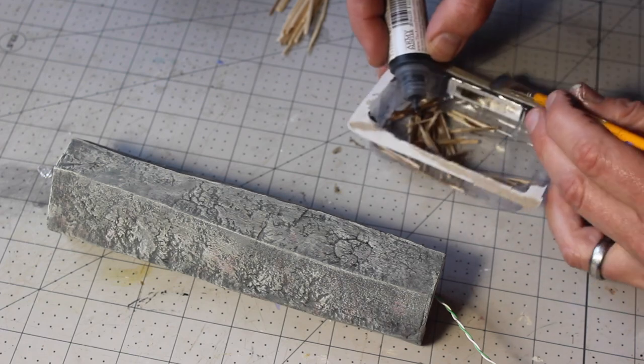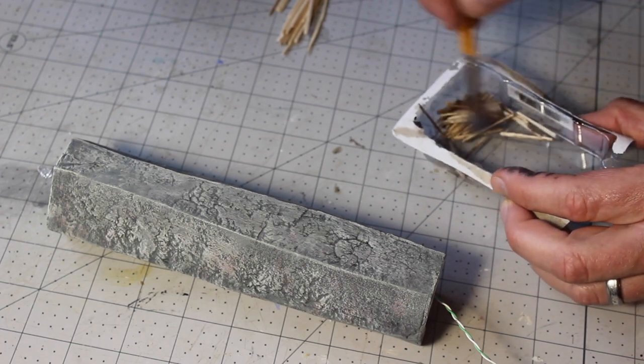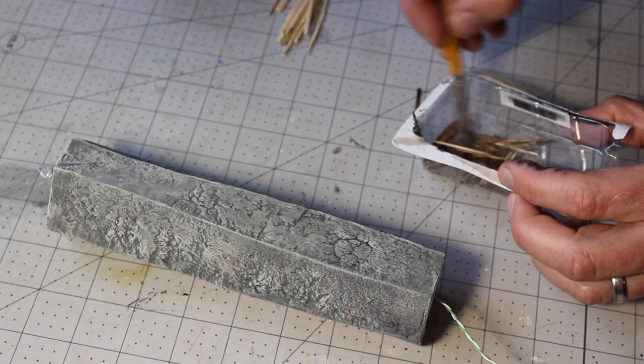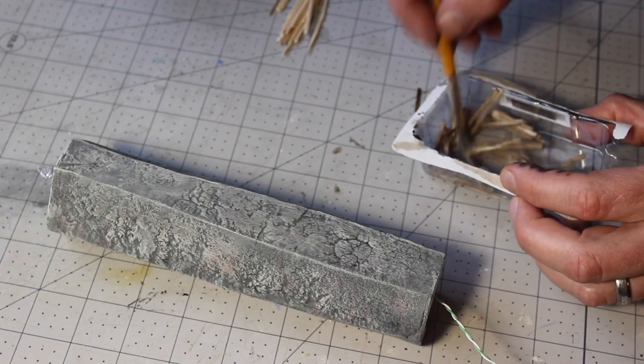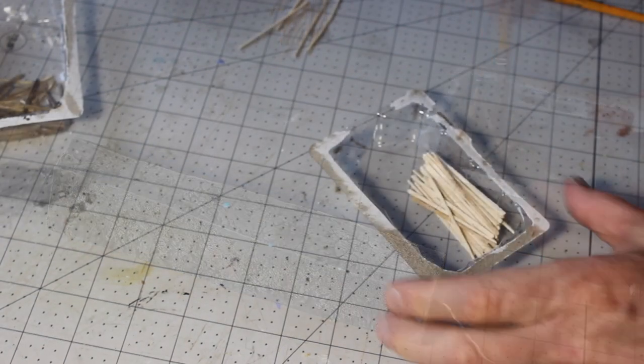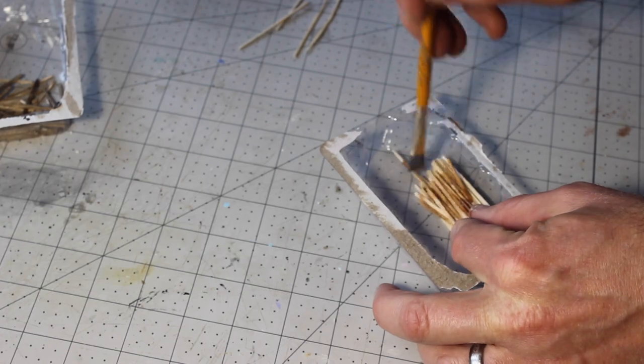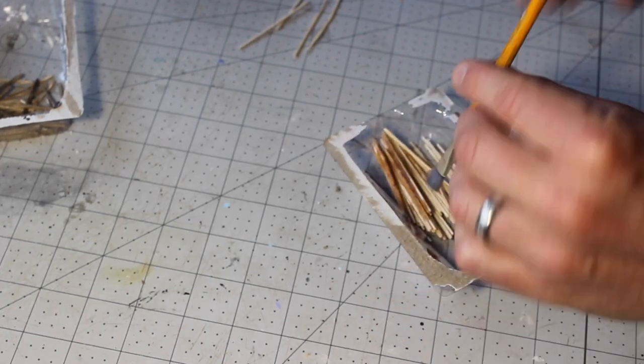Half of these I stained with Army Painter Strong Tone. Before breaking the other half, I stained them with Army Painter Flesh Wash.